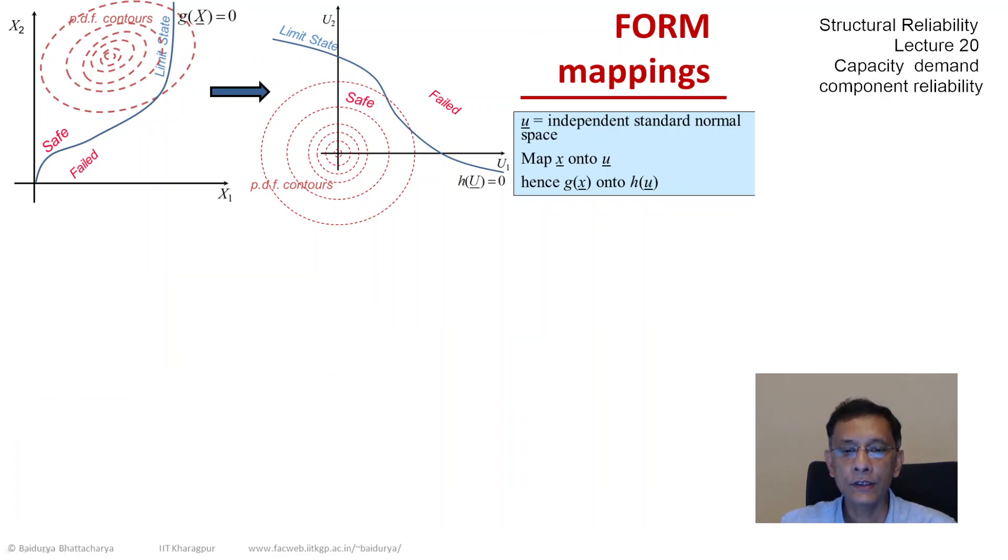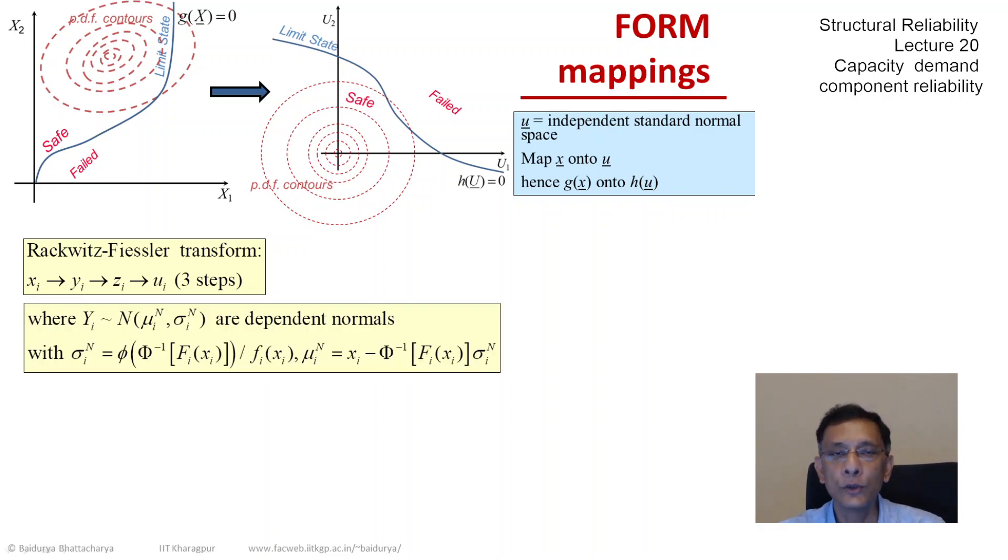If we insert an additional step in the Nataf transformation, there is a way of capturing the tail equivalence, the tail of interest between the x space and the u space. That is known as the Roakwitz-Fiessler transform. Let's look at the steps. We start with x, then we get a y, then from y we get a z, and then finally the u.